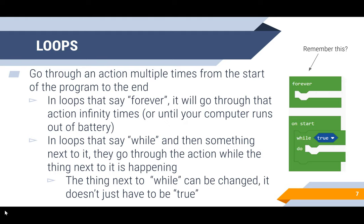In loops that say while, and then something next to it, they go through the action while the thing next to it — which is called a condition — is happening. The thing next to while can be changed; it doesn't have to be true. A helpful hint is that the conditions, which are the thing next to the while, are often shaped in that diamond form.